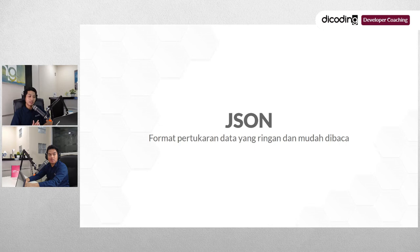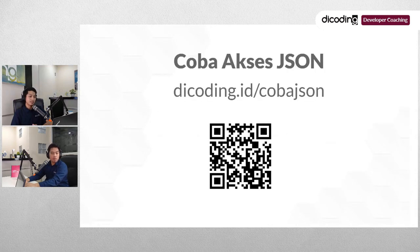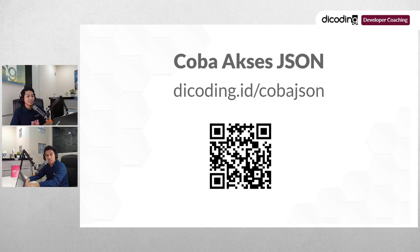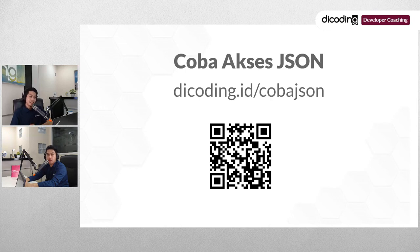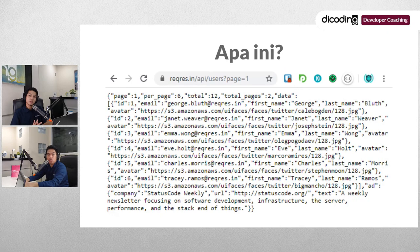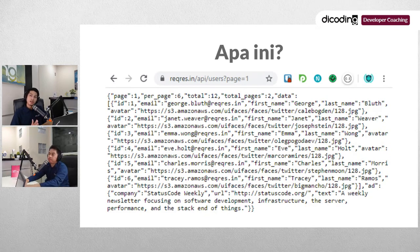JSON adalah sebuah format pertukaran data yang ringan dan mudah dibaca. Modelnya yaitu key dan value. Singkatannya dari JavaScript Object Notation. Teman-teman bisa akses di decoding.id/coba-json atau scan QR code-nya. Di sana saya mengambil salah satu web API yang biasa digunakan untuk latihan, namanya reqres.in. Di sini saya mengambil data users — makanya di URL ada slash api slash users. Datanya kelihatan banyak, tapi itu tergantung preferensi yang bikin si API-nya — kadang ada yang sudah terstruktur, ada yang belum.